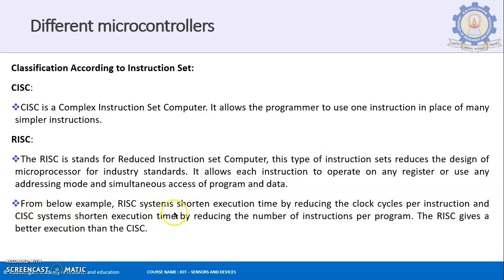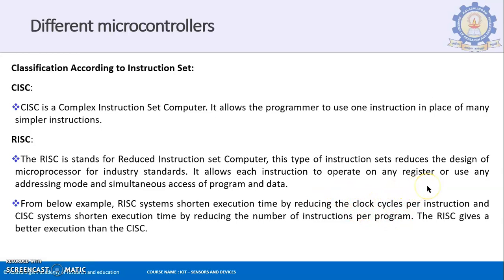RISC systems shorten execution time by reducing the clock cycles per instruction — that is its main advantage. CISC, on the other hand, shortens execution time by reducing the number of instructions per program. From an entire program point of view, CISC is better because it reduces overall execution time. But instruction-wise, RISC is better as it reduces the clock cycles required to execute a single instruction.